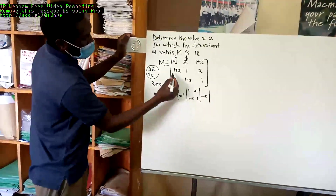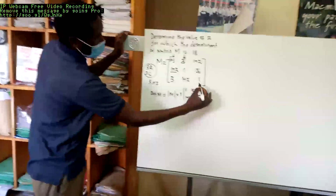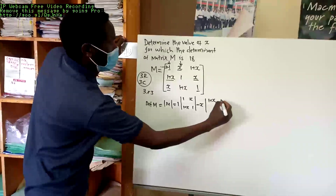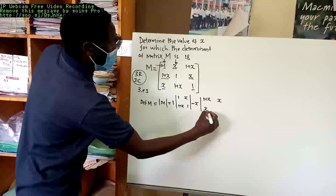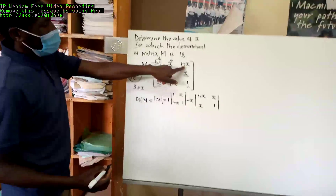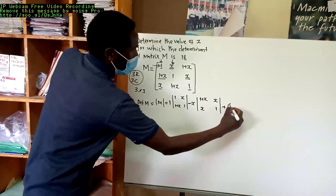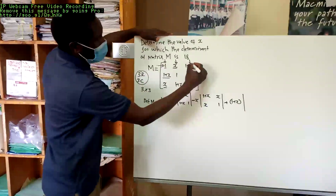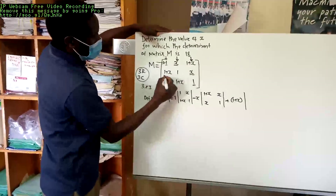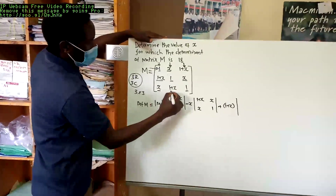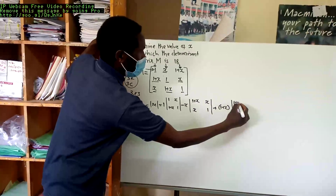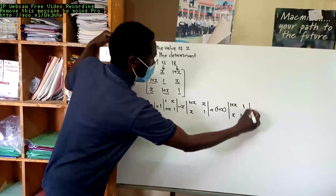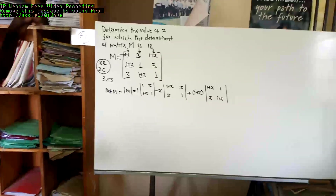We cover this row and remain with this element, this element, and that element. We form a 2 by 2 matrix. By covering this column and that row, we remain with another set of elements and form a 2 by 2 matrix with elements 1 plus X, 1, X, and 1 plus X. That's how we get the determinant of a 3 by 3 matrix.